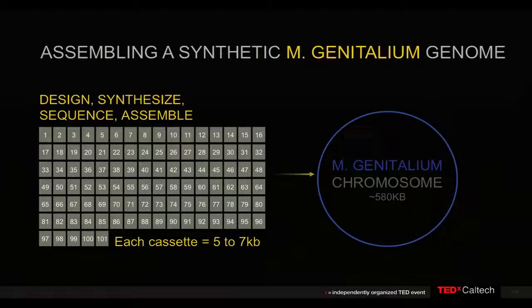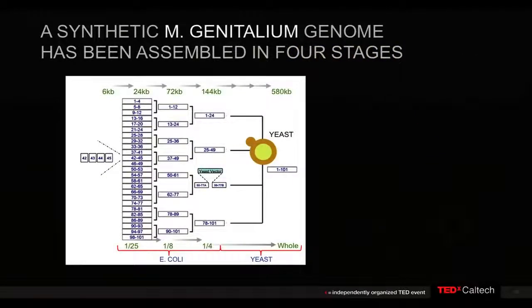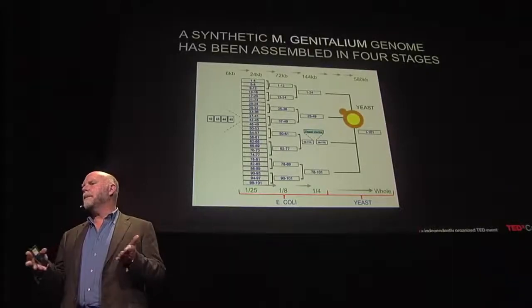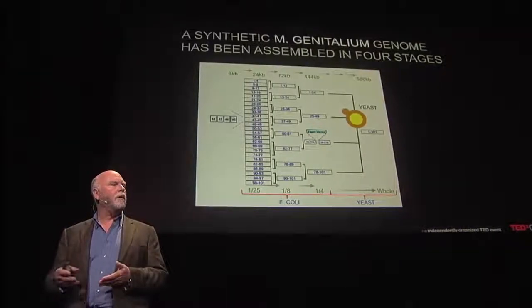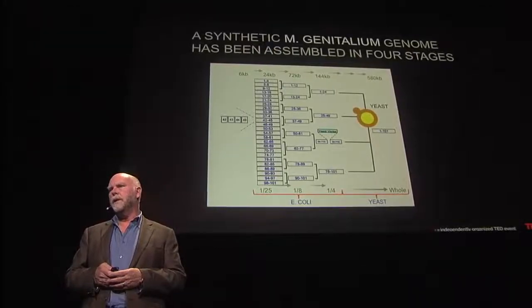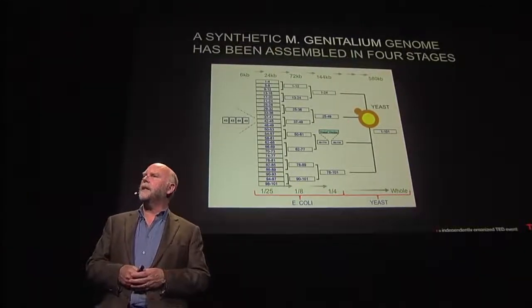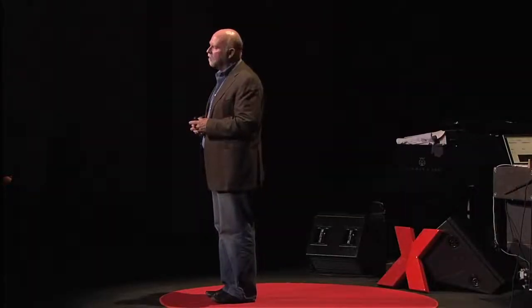We started with cassettes on the order of viruses — five to seven thousand letters — and set up a process for assembling those in stages, making larger and larger pieces. It sort of looks like a basketball playoff. At each stage we would take the DNA, clone it in E. coli, make a lot of it, and sequence it for validation, then take those pieces and assemble them in the next stage to make larger pieces. It was very slow, painstaking work.